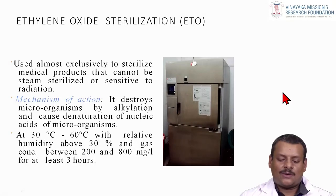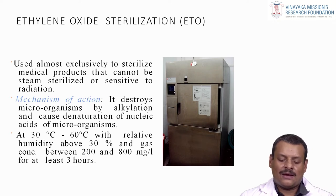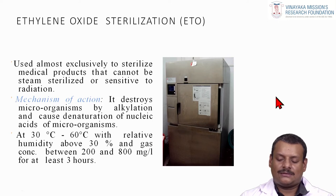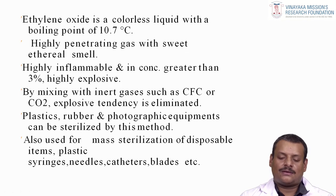Ethylene oxide sterilization is used almost exclusively to sterilize medical products that cannot be steam sterilized or are sensitive to radiation. It destroys microorganisms by alkylation and causes denaturation of nucleic acids. Conditions required are 30°C to 60°C with relative humidity above 30%, and a gas concentration between 200 and 800 mg per litre for at least 3 hours. Ethylene oxide is a colorless liquid with a boiling point of 10.7°C, a highly penetrating gas with a sweet smell. It is highly inflammable and explosive; mixing with inert gases such as CO₂ eliminates the explosive tendency.